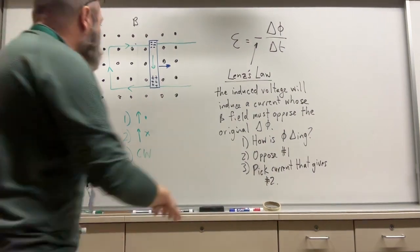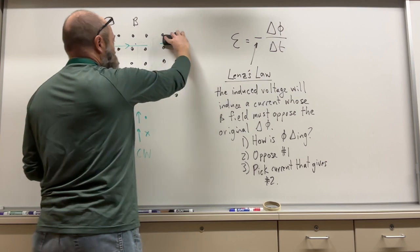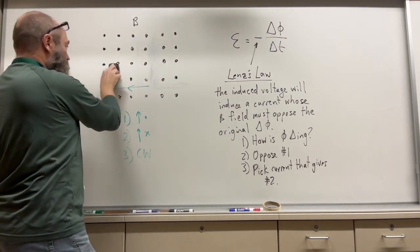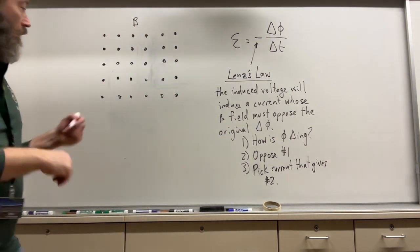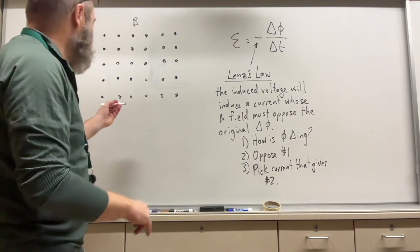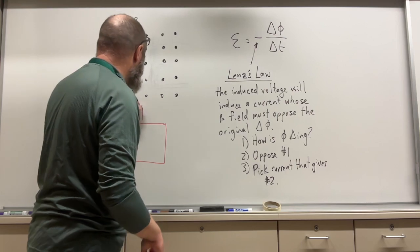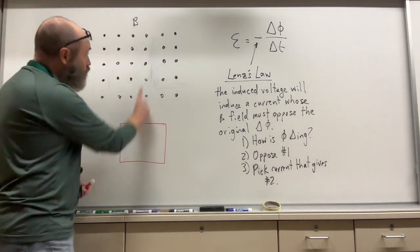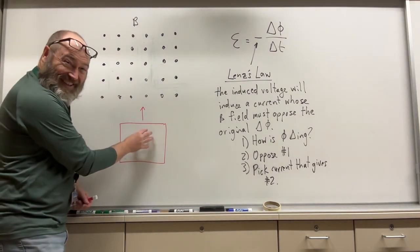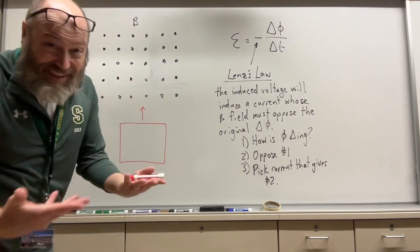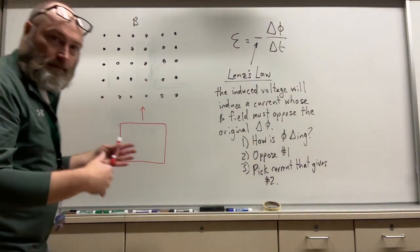Let's do one more example problem. We'll stay with our dots. Rather than a bar, let's say my new problem has a loop that is going to move into a magnetic field. Right now there is no flux, and then later it's going to get more flux. This is going to end up being the same type of problem, but that's okay.